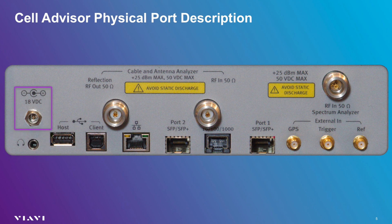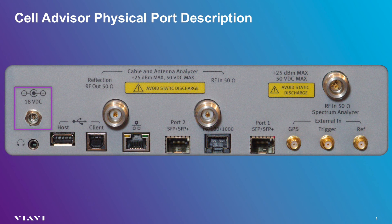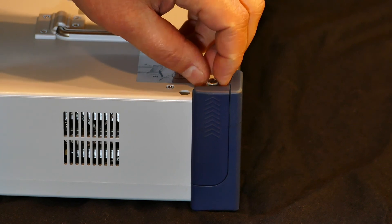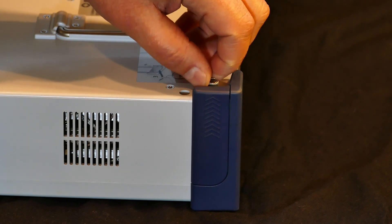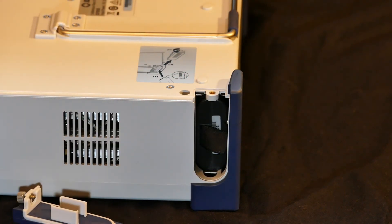On the back left of the Cell Advisor is the DC power adapter port. This port can be used with the included AC adapter or an optional car charger. When external power is connected, the front of the instrument will display an amber charging light next to the on-off button. If the unit is kept in storage for an extended period longer than 30 days, it is best to completely charge the battery and remove it prior to storage. The battery is removed by unscrewing the fastener on the battery door and sliding the door straight back. The battery can be pulled out by grasping the ribbon attached to the end of the battery.